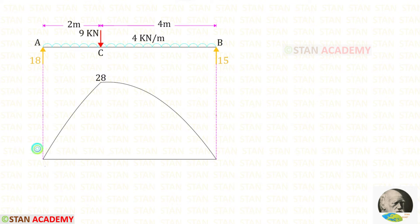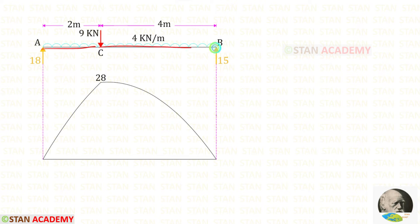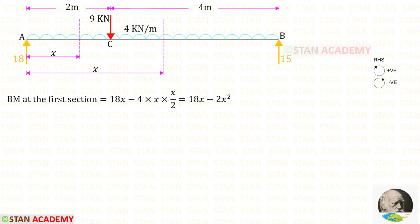We have to find the area of this diagram. Since it is a parabolic shape, it is difficult to find the area directly, so we need to use integration. To set up the integration, we make sections in this beam. There are two different parts, AC and CB, so we make two sections — one in AC and one in CB — both measured at distance x from point A. Now we are going to find the moments in the sections from point A, with clockwise positive and anti-clockwise negative.